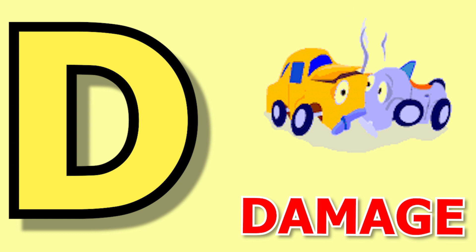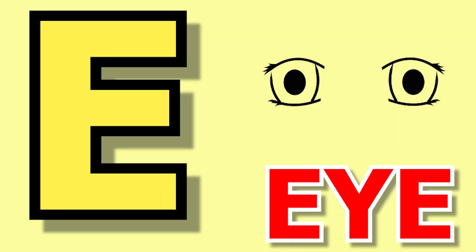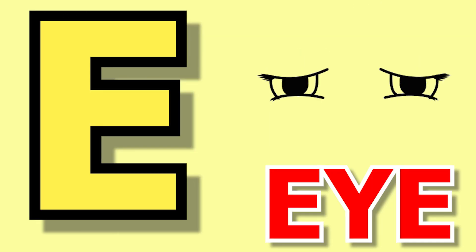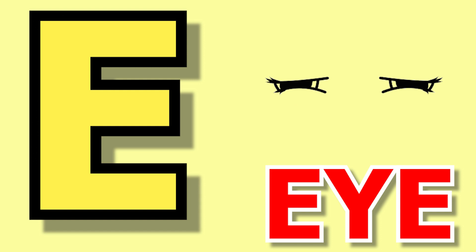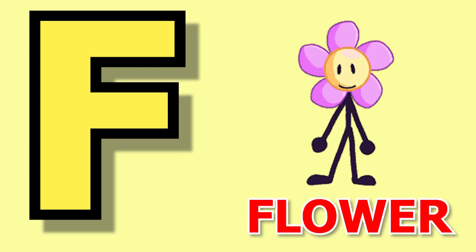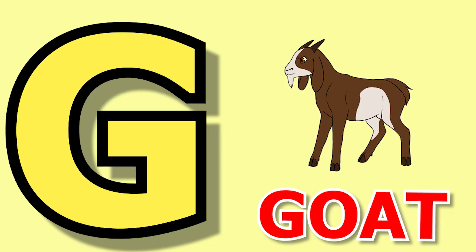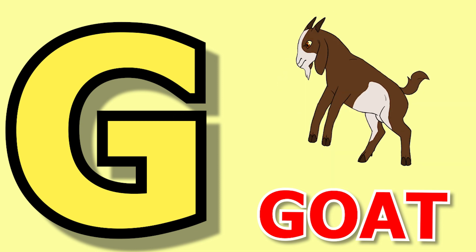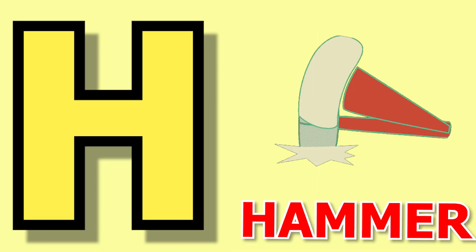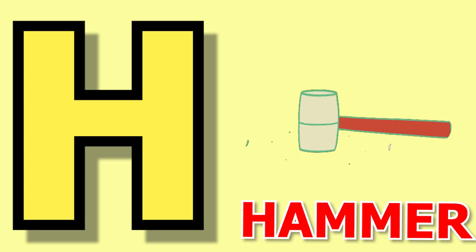E for eye, eye means aag. F for flower, flower means full. G for goat, goat means bakri. H for hammer, hammer means hatoda.